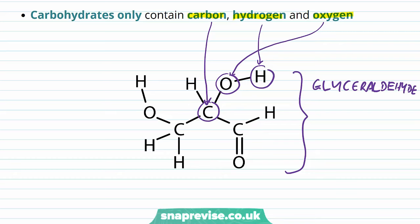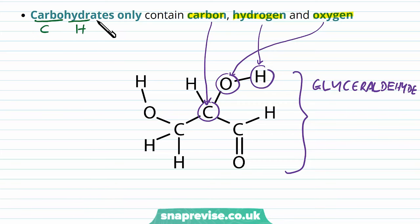To help remember which elements are in carbohydrates, look at the word itself: we have 'carbo' for carbon, 'hydra' for hydrogen, and '-ates' for oxygen, because '-ates' usually refers to the addition of oxygen. So any carbohydrate you come across, whether very small or very large, will only ever contain carbon, oxygen, and hydrogen.